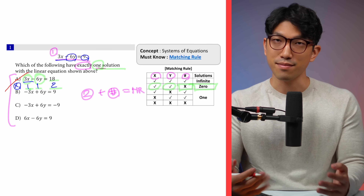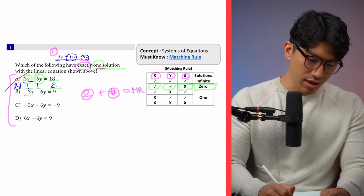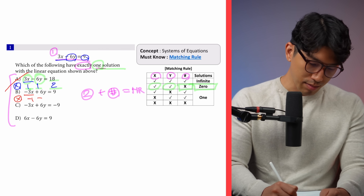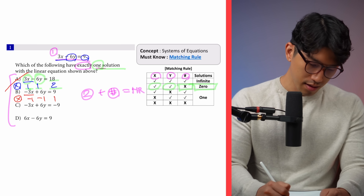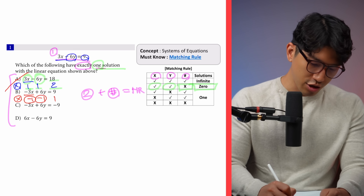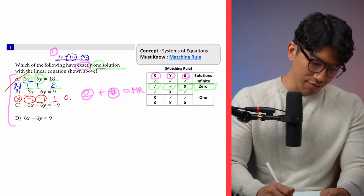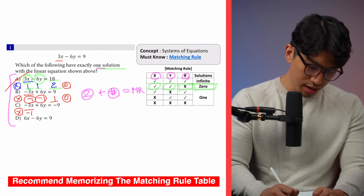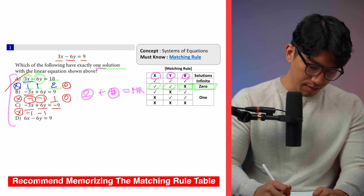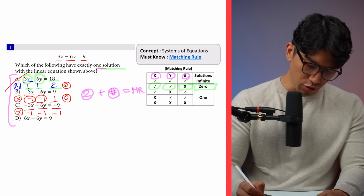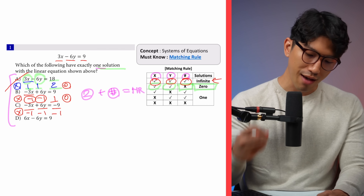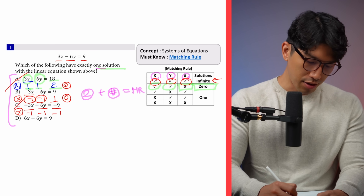We do the same thing for choices B, C, and D. For choice B: minus 3x and minus 3x is times minus 1, 6y is times minus 1, and 9 is just times 1. Again, x and y match but the number is different — zero solutions. For choice C: 3x and minus 3x is times minus 1, minus 6y and plus 6y is times minus 1, and 9 and minus 9 is times minus 1. All three are matching, which means infinite solutions — so that one is out.